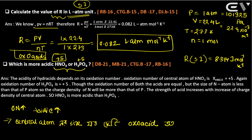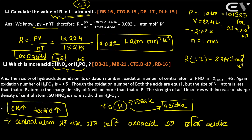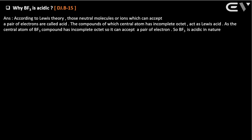Oxoacid acidity. The acidity of oxoacids depends on the size of the central atom and the oxidation number. Oxygen forms strong bonds; hydrogen bonds are weak and easily broken, making the compound acidic. To compare oxoacid acidity, consider the oxidation number of the central atom and its size.